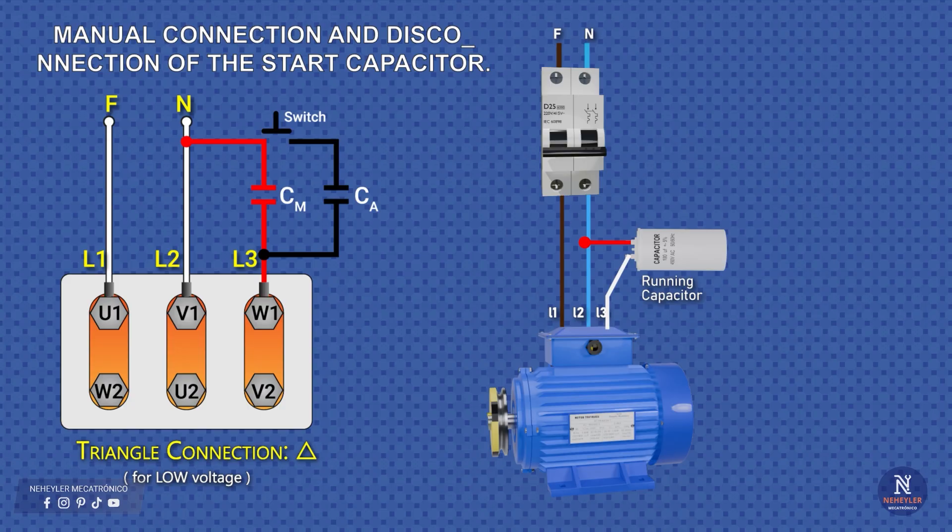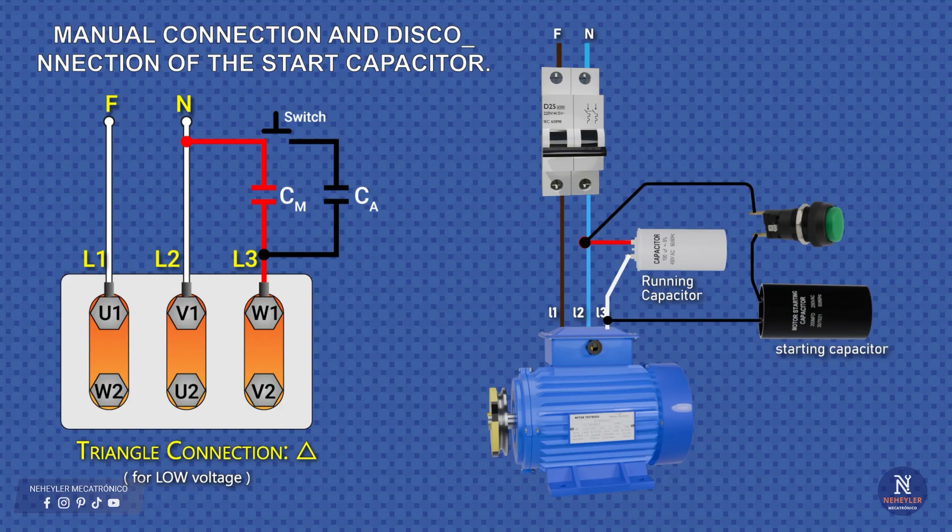Now for the start capacitor. This one should only enter service for a few seconds at the beginning, to provide more torque to the motor. It is connected in parallel with the run capacitor, but in series with the push button. That is, from the third motor terminal we connect to one side of the start capacitor. From the other side of the capacitor we connect to one terminal of the normally open push button. And from the other terminal of the push button we connect to the same junction where the neutral and the run capacitor are.